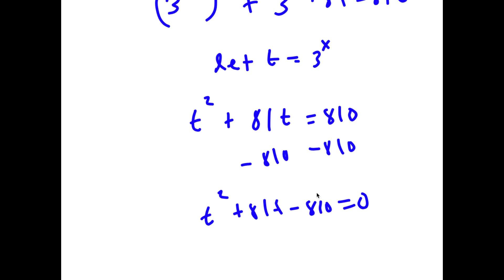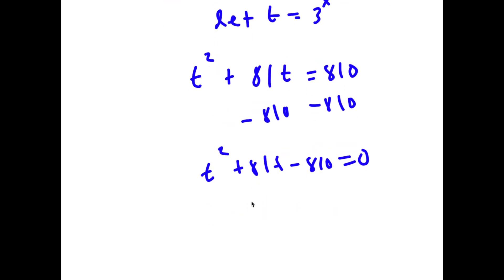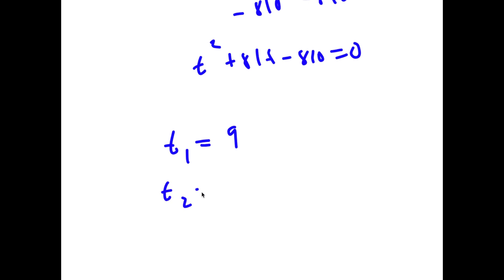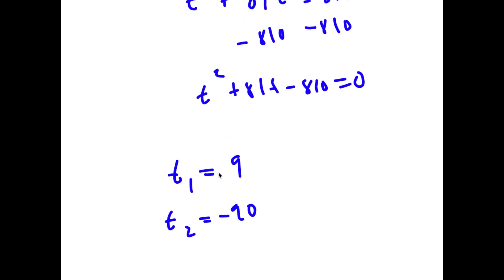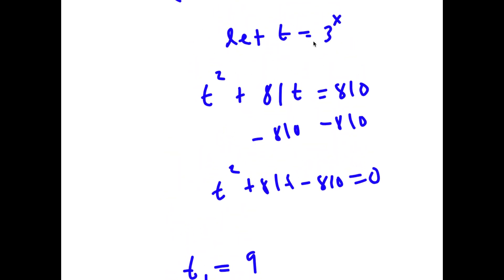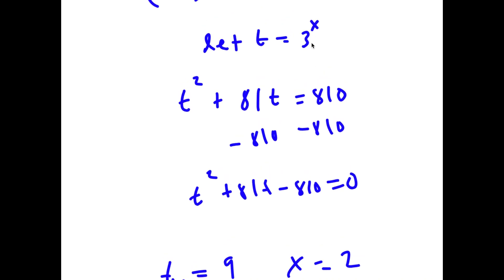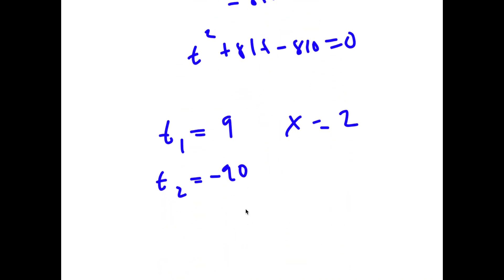I'm not going to waste your time by actually doing that, but if you do use it, you should get that t is equal to 9 or t is equal to negative 90. Now remember we set t equals 3 to the power of x. So if t equals 9, then x is equal to 2. And if t equals negative 90, well, you can't take the power of a positive number and make it negative. So x equals 2 is my only solution.